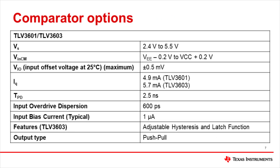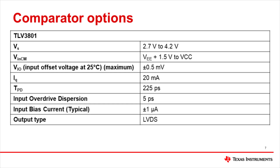Here is a condensed list of specifications for the TLV3601 and TLV3603. The TLV3603 has nearly identical specifications to the TLV3601, except it has an additional pin option for adjustable hysteresis and latch. The first set of alternate options is the TLV3604 and TLV3605, which have LVDS outputs and faster response times; the TLV3605 also provides the option to configure for external hysteresis or latch. The next option is the TLV3801 with LVDS outputs, which accepts both single and split supply, has very low propagation delay of 225 picoseconds, and very low input overdrive dispersion — a great option if LVDS signals are required for downstream devices.